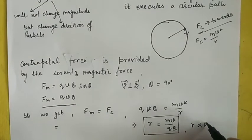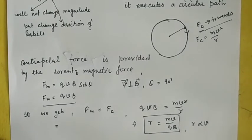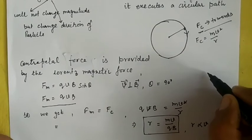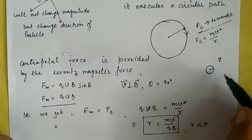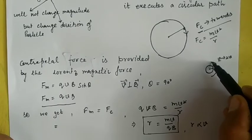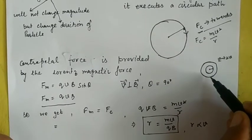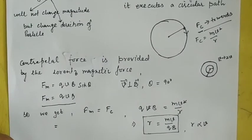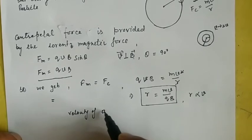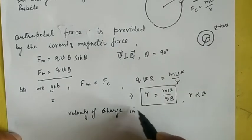From the formula r = mv/(QB), the radius of the circular path is directly proportional to the velocity. If a particle moves with a smaller velocity, its circular path has a smaller radius. If the velocity is doubled to 2V, the radius of the circular path also doubles.